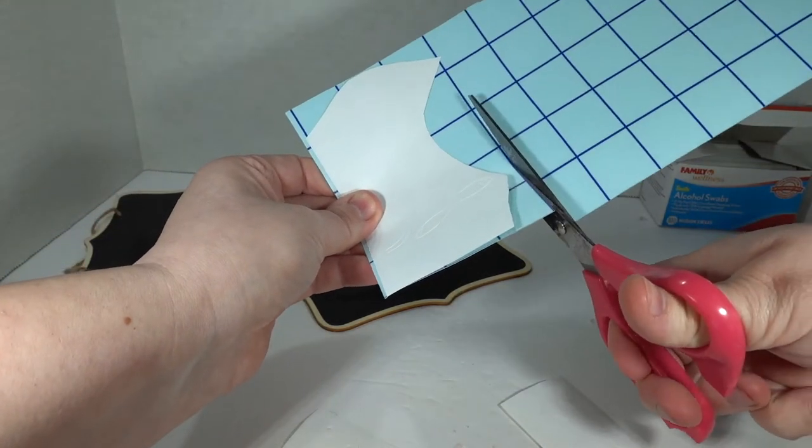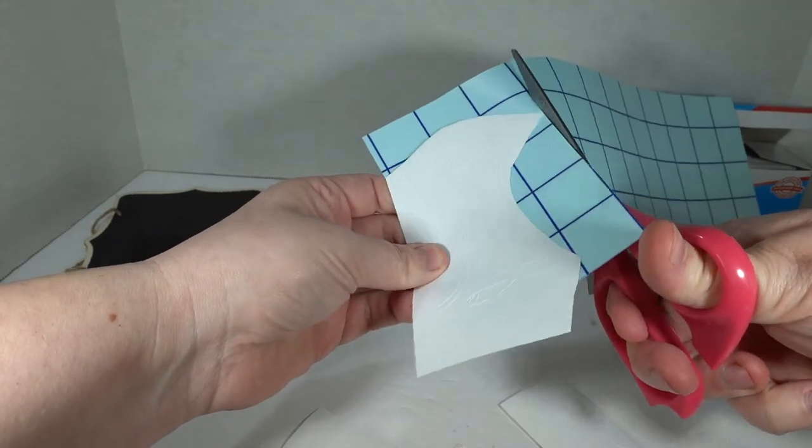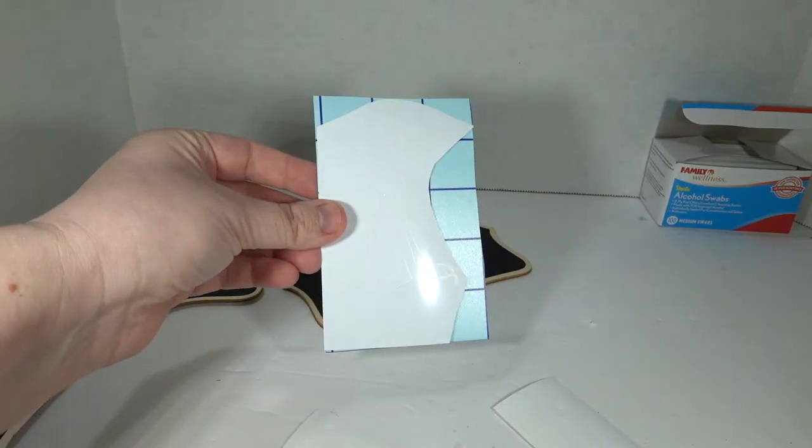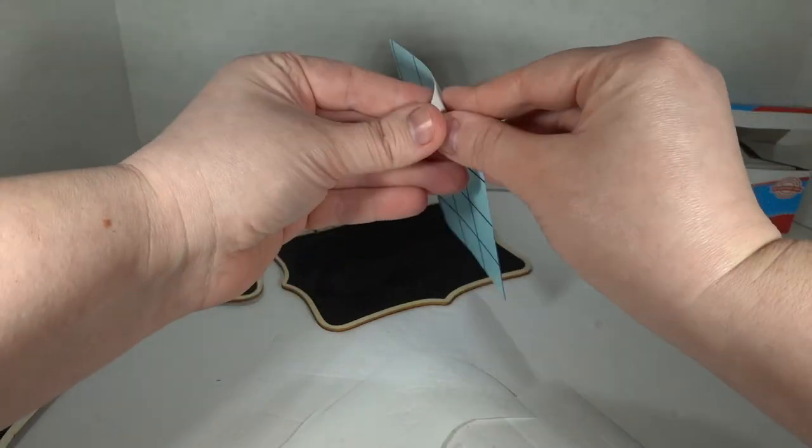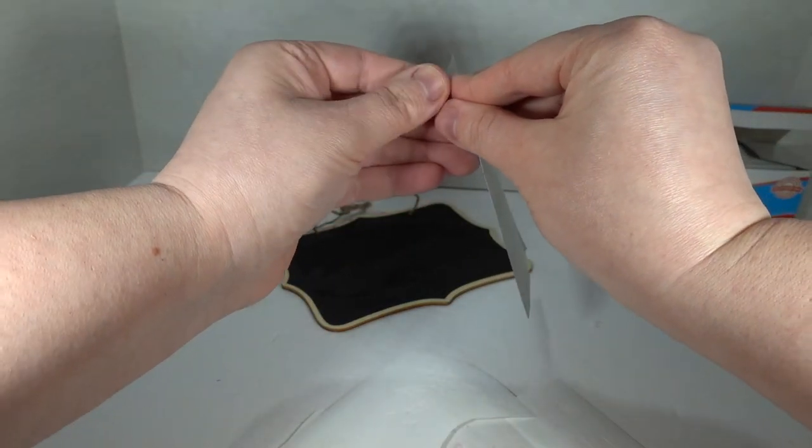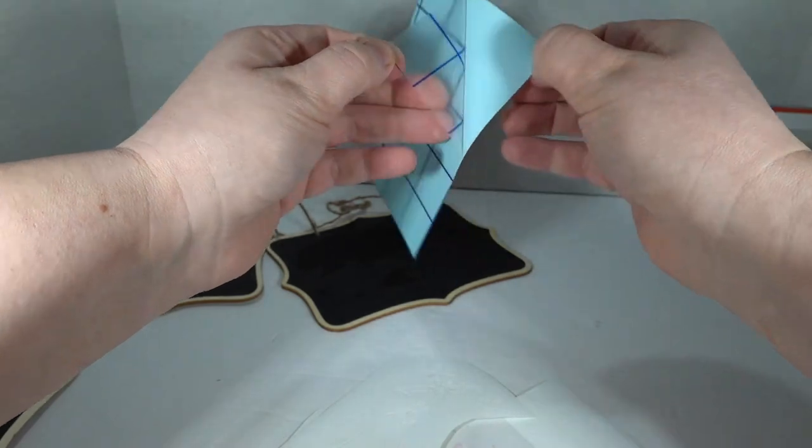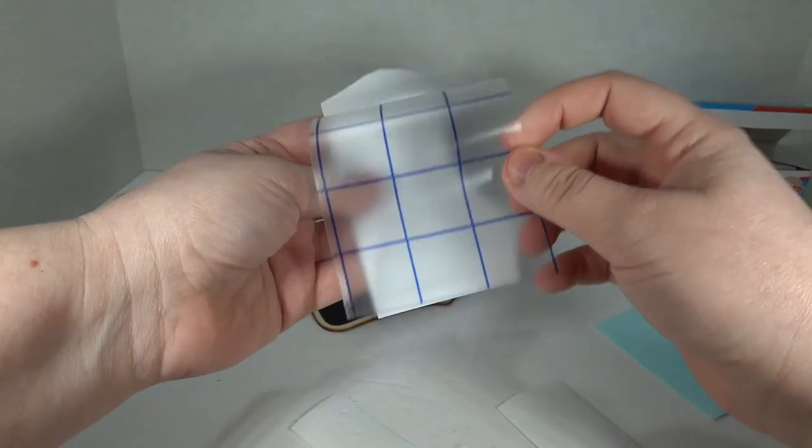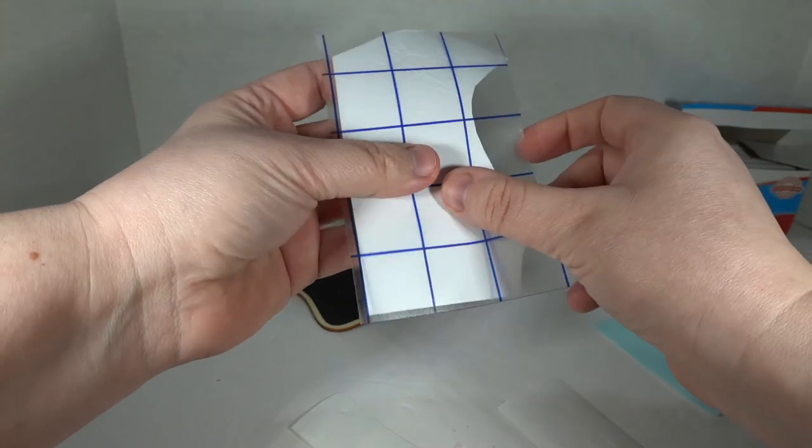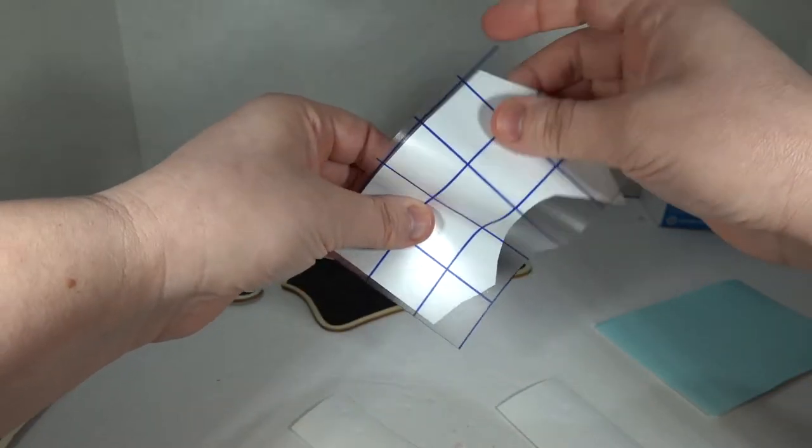So the nice thing about this particular contact paper is that it has a grid. And just like with the alcohol swabs, I'm going to save as much money as I can by reusing this contact paper as many times as it will allow. But it should just peel off like a sticker.